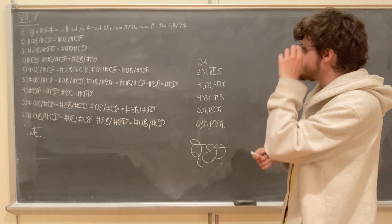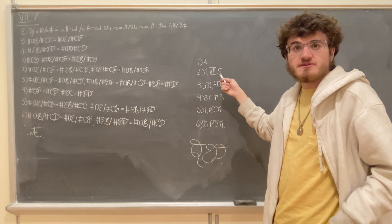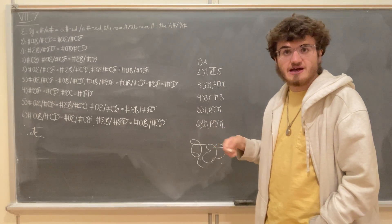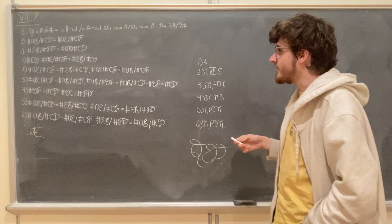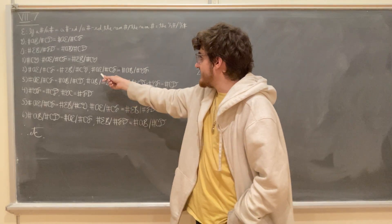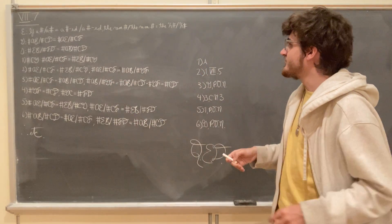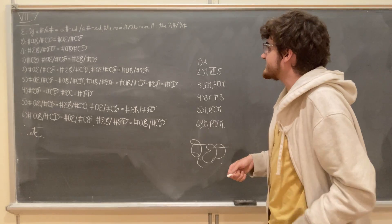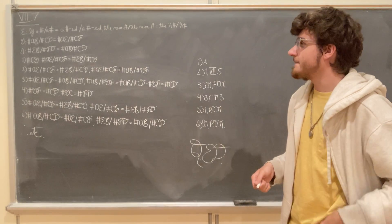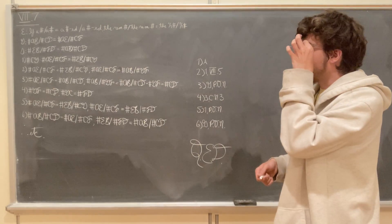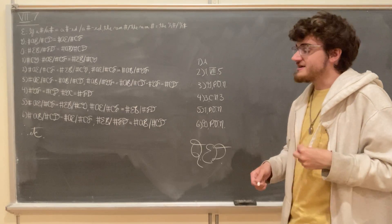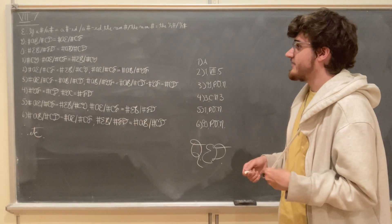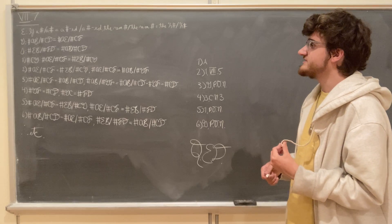We can say by Proposition 7.5 that the sum will be the same part of the sum that the one number is of the one number, so that the number AE is the same part of the number CF that the sum, the number AB, is of the sum, the number GF. But we know that the number AE is the same part of the number CF that the number AB is of the number CD.